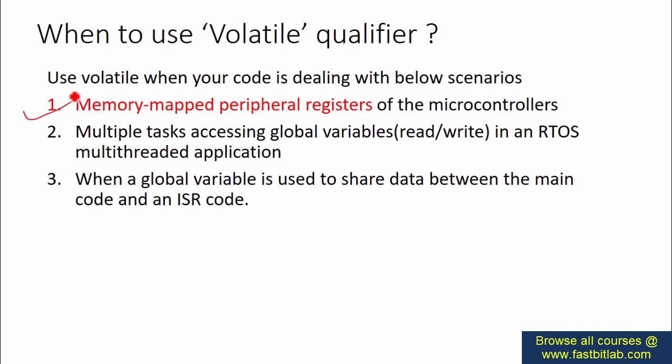Use volatile when your code deals with these scenarios: when working with memory-mapped peripheral registers of microcontrollers; when using multiple tasks accessing global variables in an RTOS multi-threaded application; or when a global variable is used to share data between the main code and an ISR. In all these scenarios, use volatile generously. For other cases, volatile is not required.